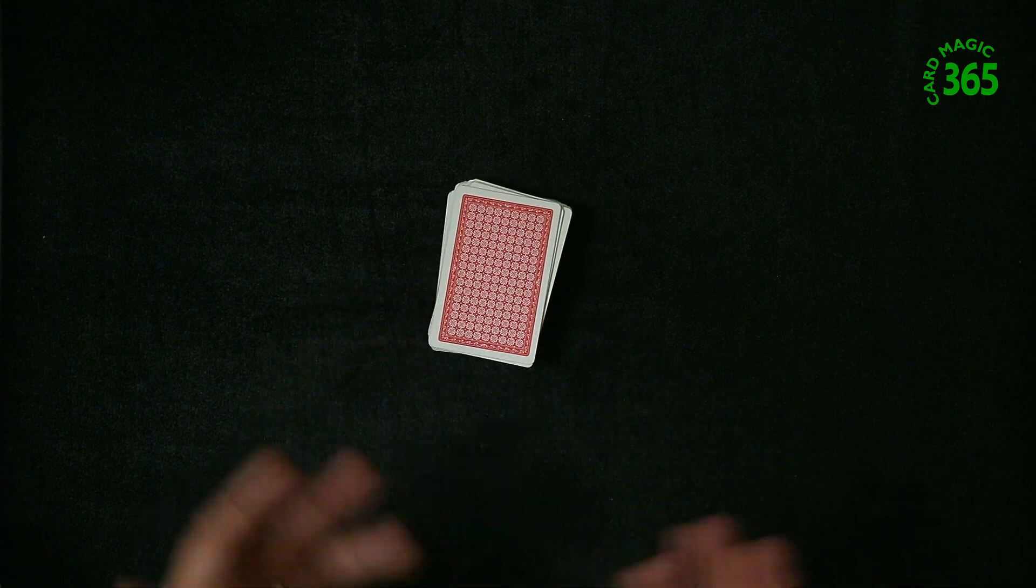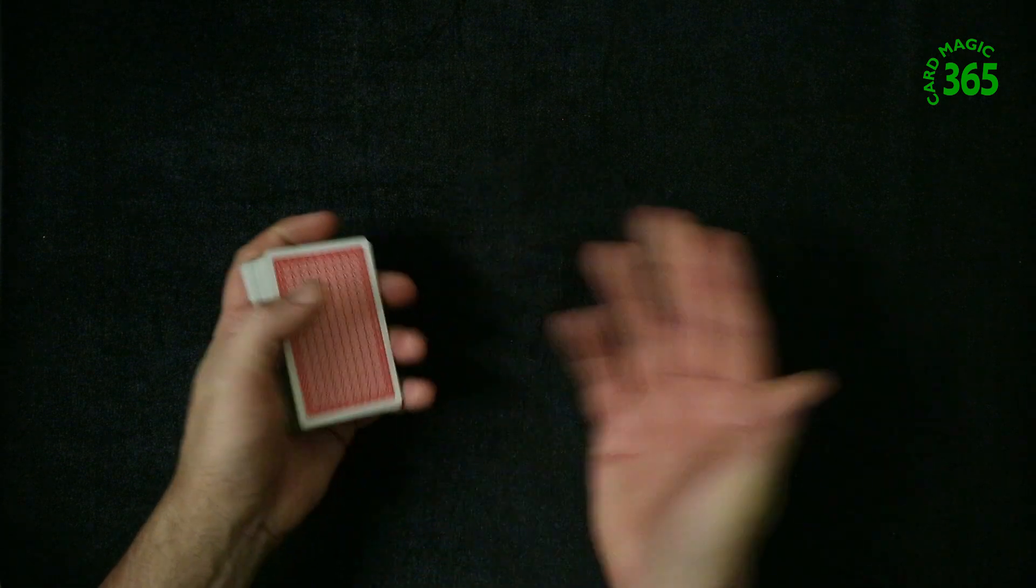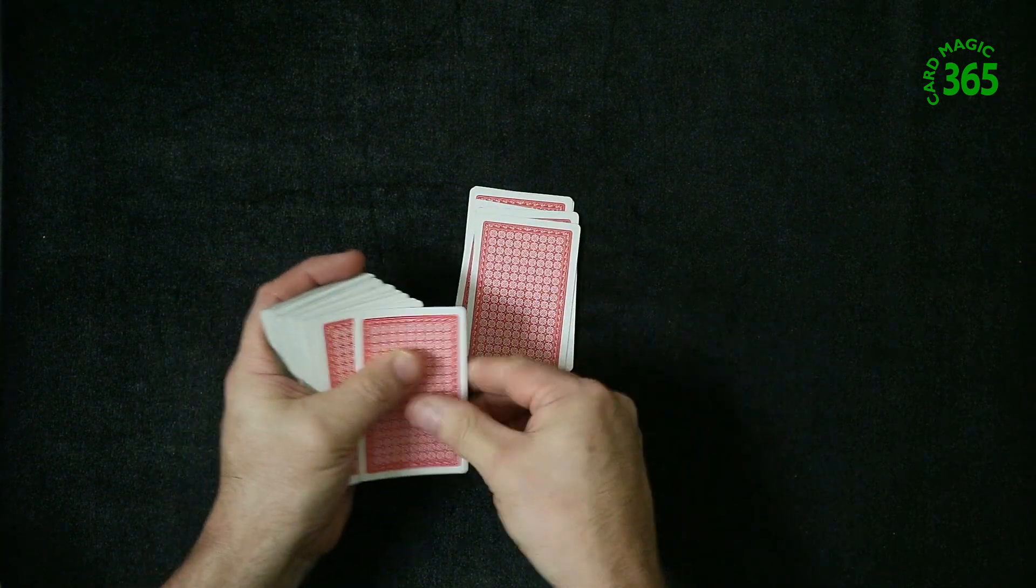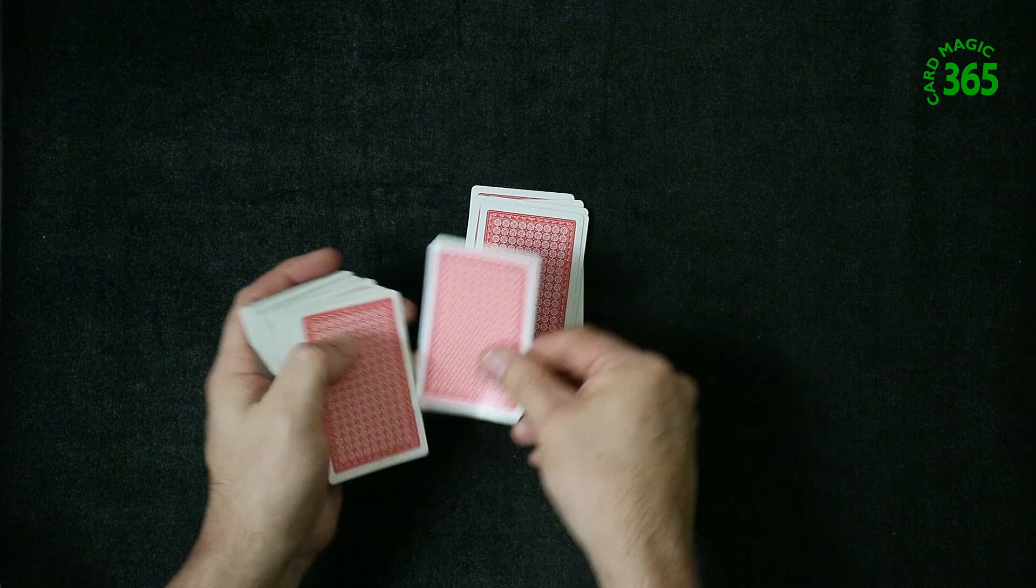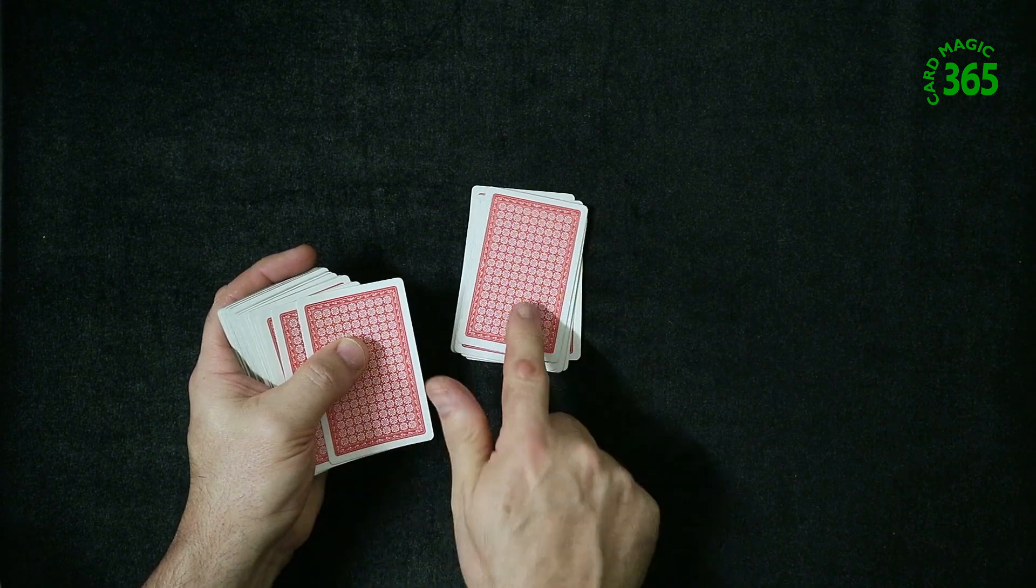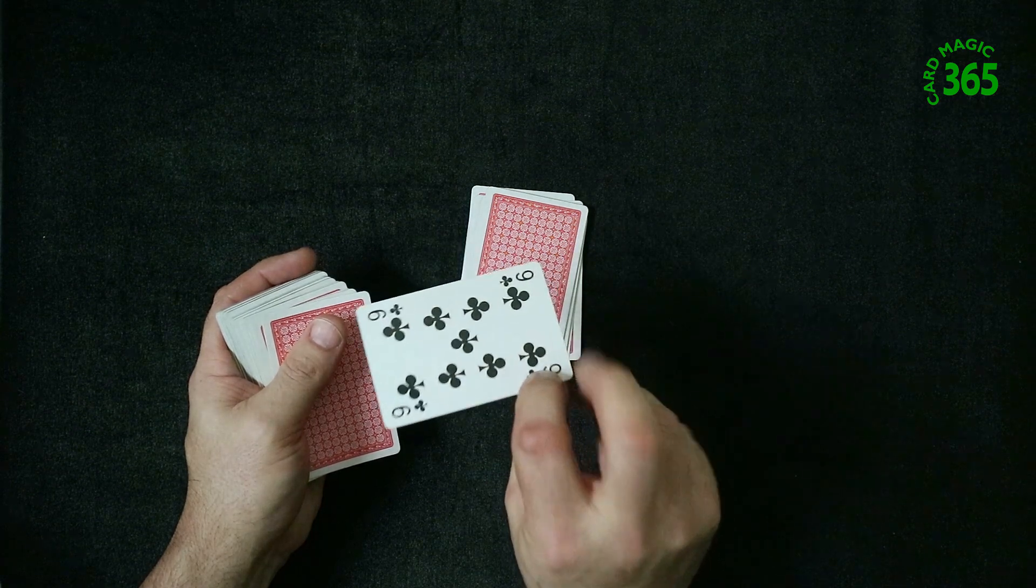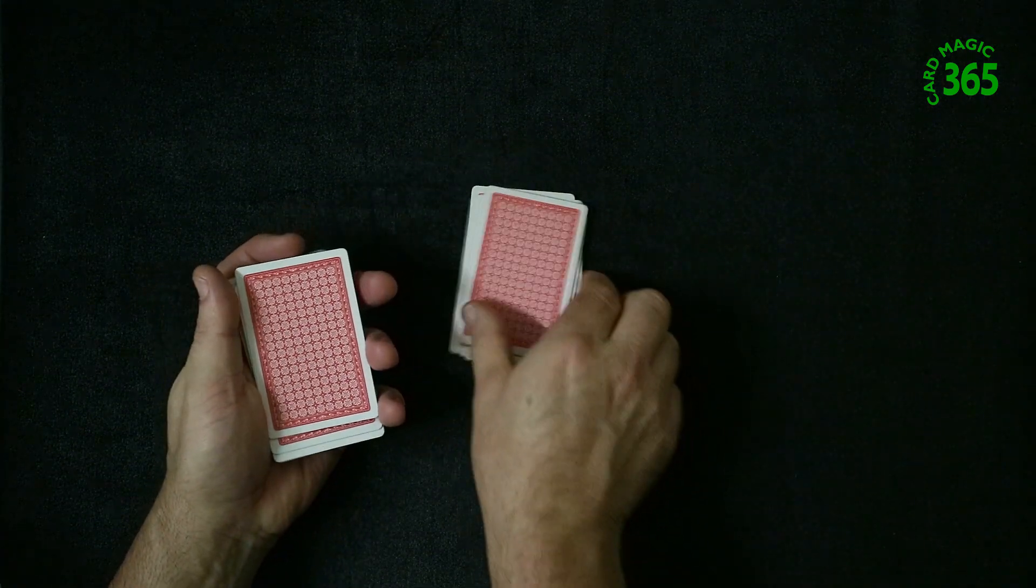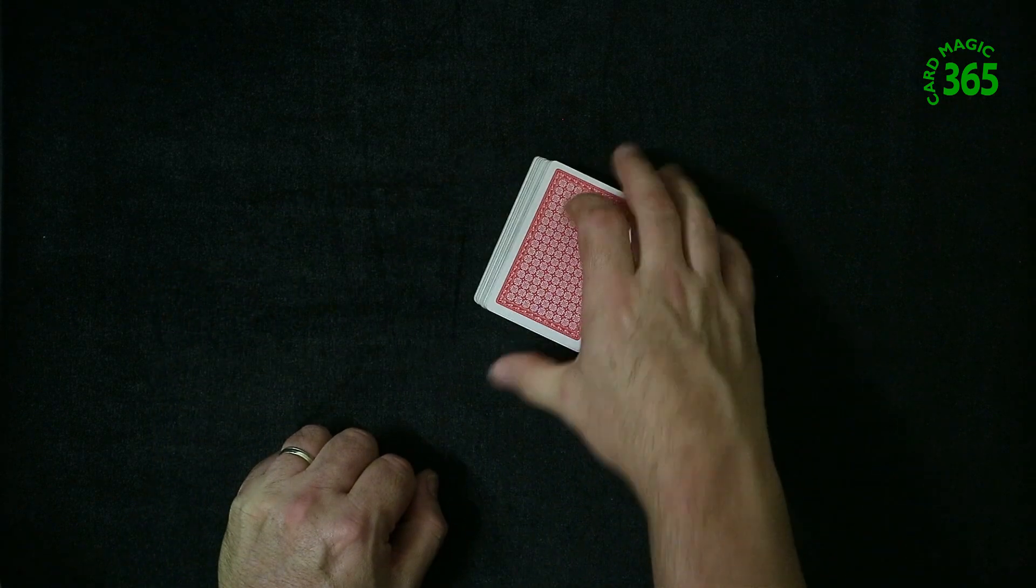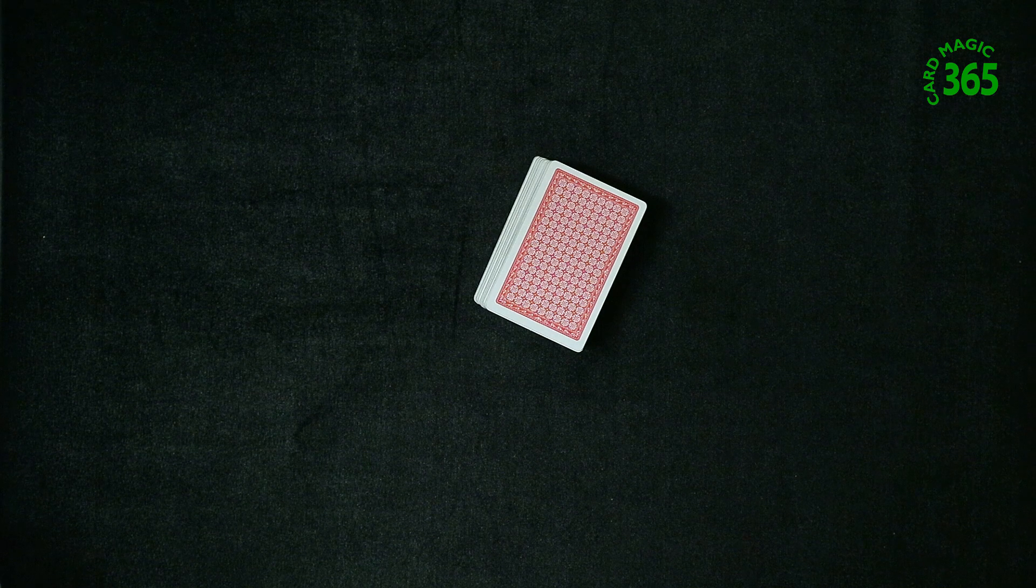You ask the spectator to give you a number. Let's say they chose 10: 1, 2, 3, 4, 5, 6, 7, 8, 9, 10. And then they look at the next card, not the 10th one, the next card. It's not going to be their card. You put that back and then they drop the cards back on top.